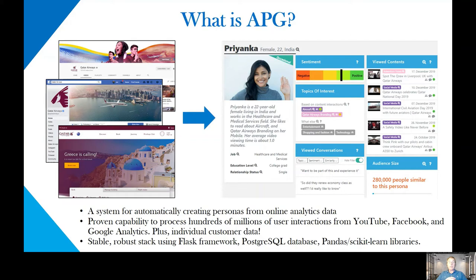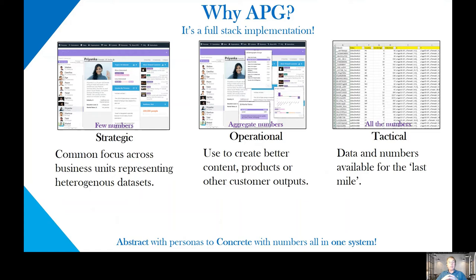We have an online system that can currently generate personas from multiple social media platforms: YouTube, Facebook, Instagram, Google Analytics, and with individual customer data. The system is very robust — we're handling tens of millions of user interactions for many large corporations. We run an open source back-end database and leverage Pandas libraries for manipulation and presentation. One advantage of a data-driven persona system is that it's really full stack: we have personas at the strategic level, operational statistics and probabilities, and at the tactical level, the numbers about individual users — going from abstract representation to concrete numbers, all in one system.